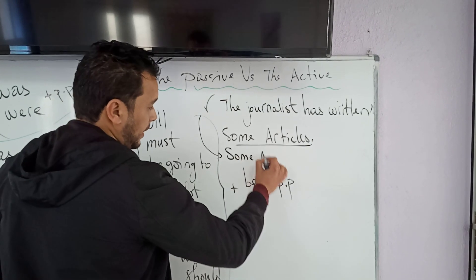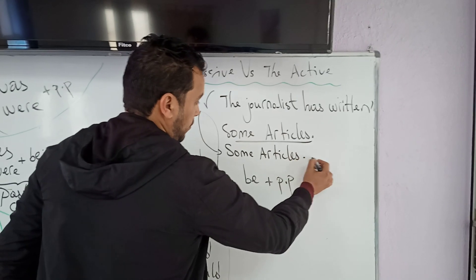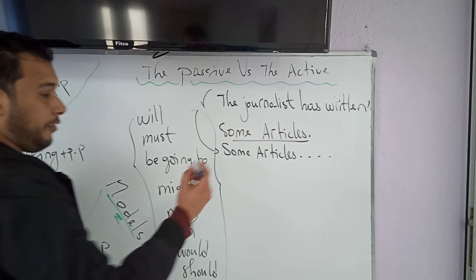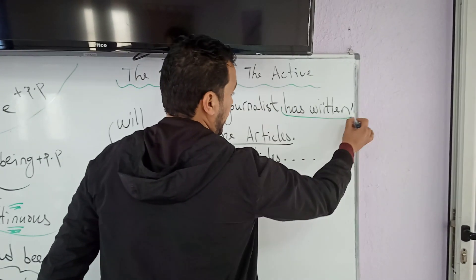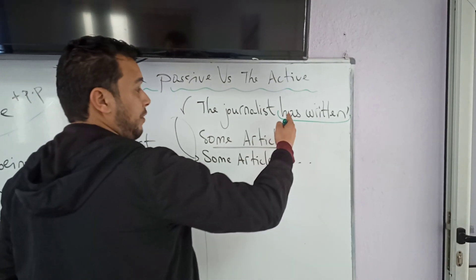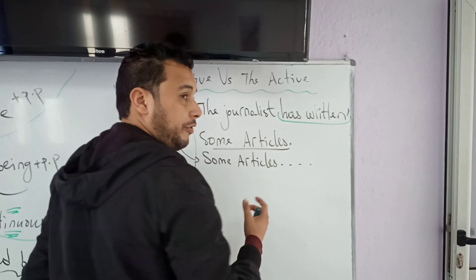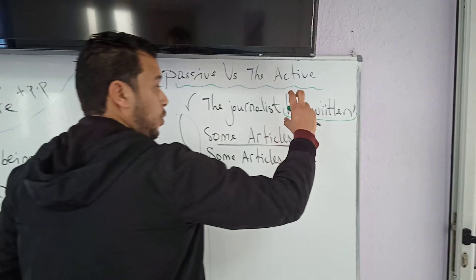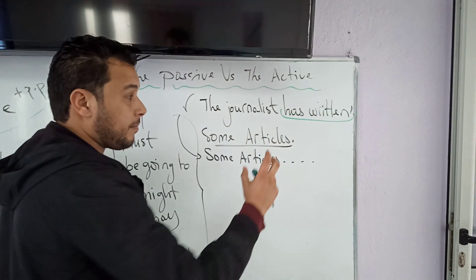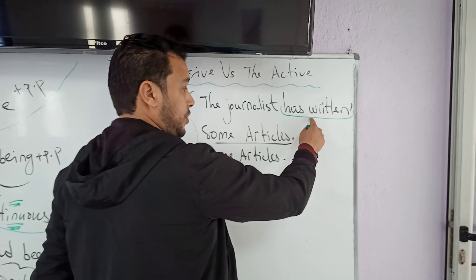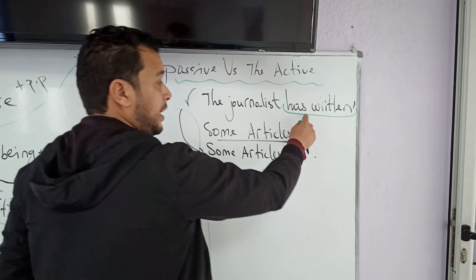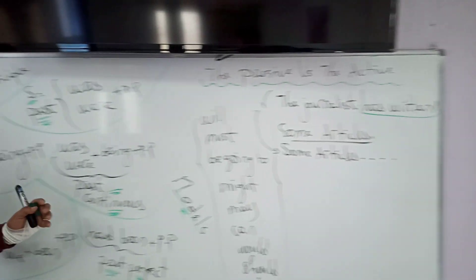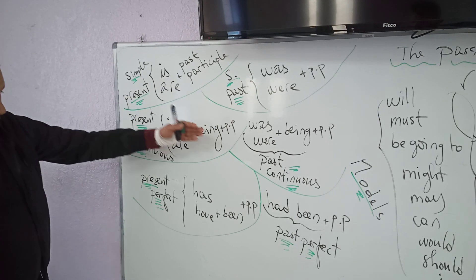Here we have 'some articles' and we have to complete the sentence in the passive voice. The verb in the active voice is 'has written' — we have auxiliary 'has' plus past participle of the verb. To switch to the passive voice, we have to conjugate verb 'to be' in the same tense as this verb. As you can see, this is present perfect.